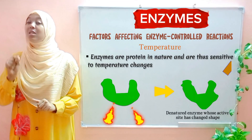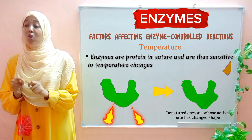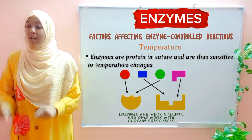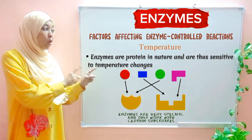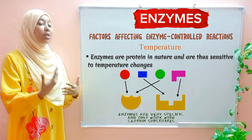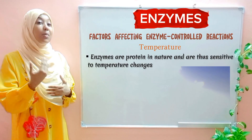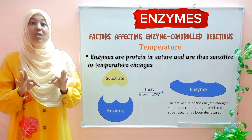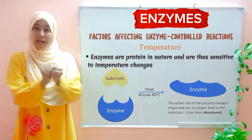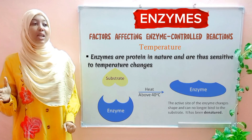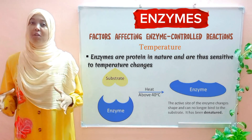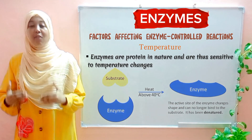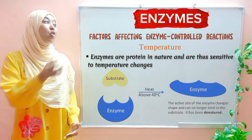The structure of an enzyme is very important to its functioning because enzymes have a particular part of their structure called the active site. This is where the enzyme binds onto the substrate, allowing it to catalyze the reaction. If you increase temperatures above 40°C, the active site is destroyed, preventing the enzyme from binding to the substrate and causing it to stop functioning. This is known as being denatured.